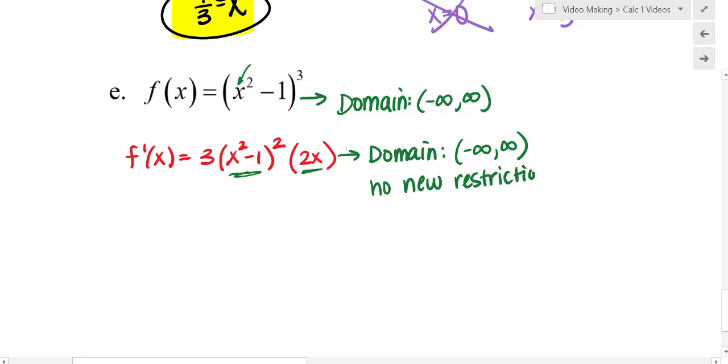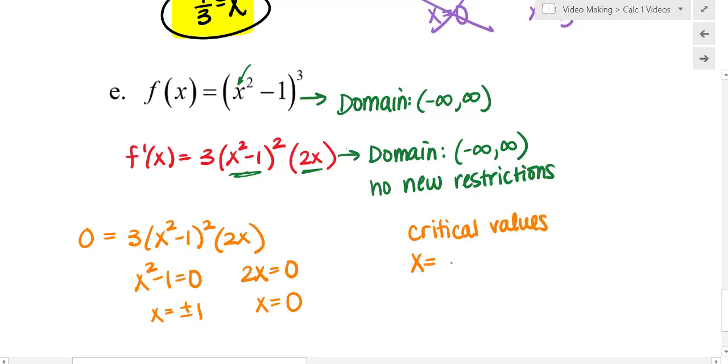So I have no additional numbers to add to my critical values list. The only values that are going to be in my critical values list are going to be ones where my first derivative is equal to zero. So that's at x squared minus one equals zero. And that's where two x equals zero because I already have it factored. So this is plus or minus one. And that is zero. So my critical values are x equals negative one, positive one, and zero.